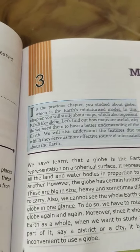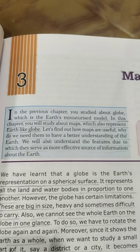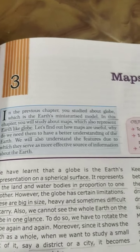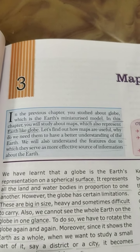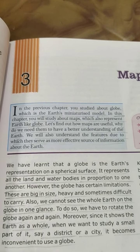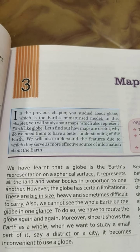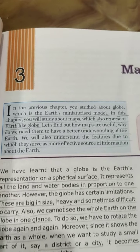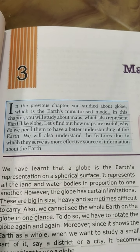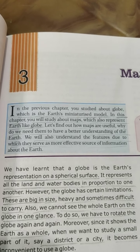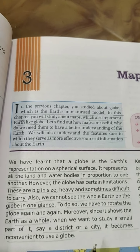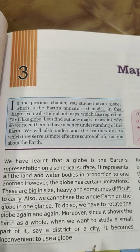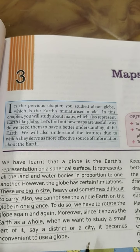In the previous chapter, we studied about the globe, which is the earth's miniature model. In this chapter, you will study about maps, which also represent the earth like the globe. Let's find out how maps are useful and why we need them, to have a better understanding of the earth. We will also understand their features, due to which they serve as a more effective source of information about the earth. So children, let's start the chapter.